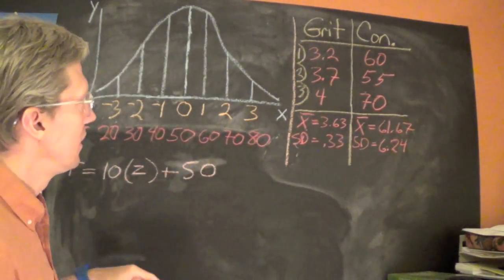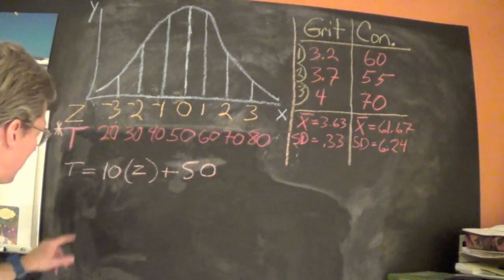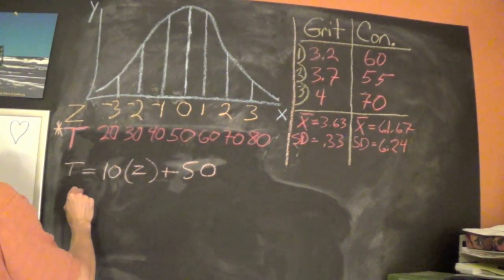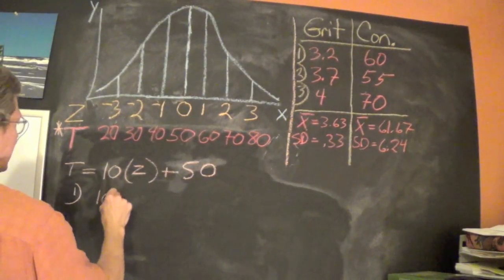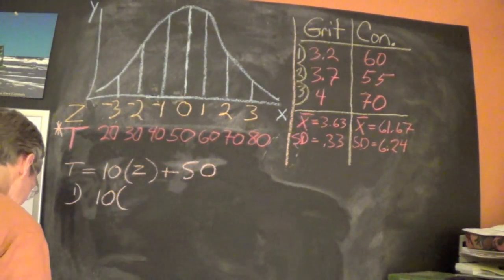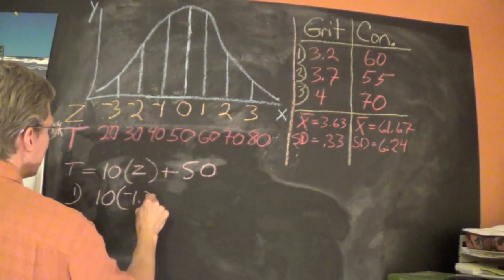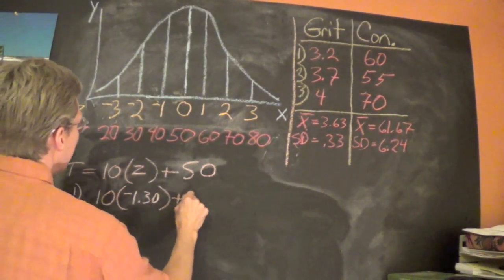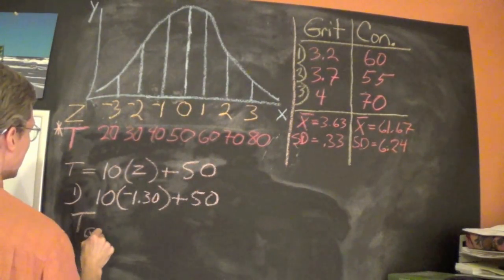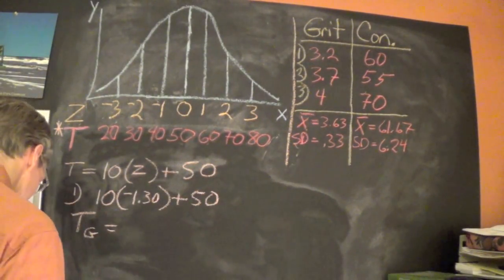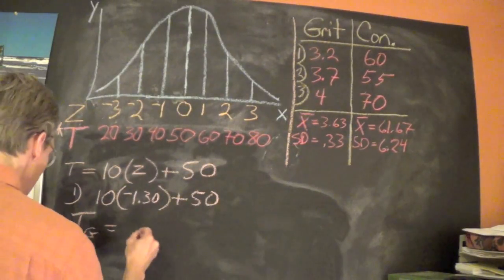And probably be good if I had all the Z-scores listed but I've already worked out one. So let's again look at student one and we'll say 10 times their Z-score which was negative 1.30 plus 50 gives a T-score for the grit equals 37.